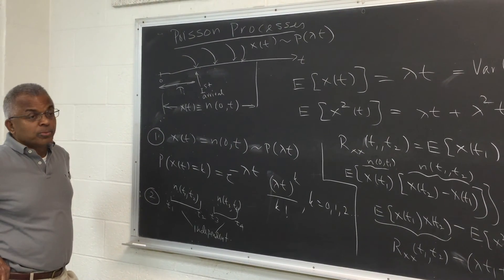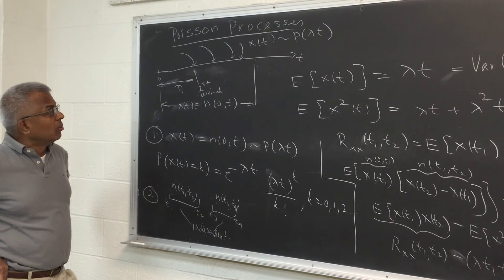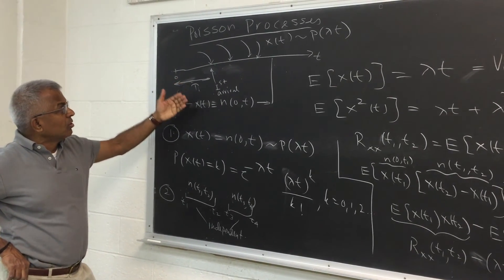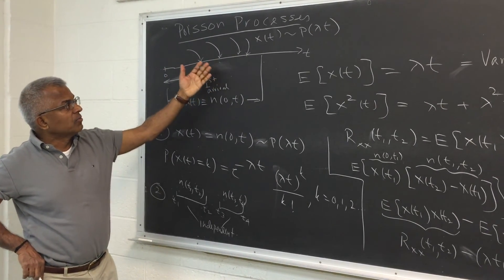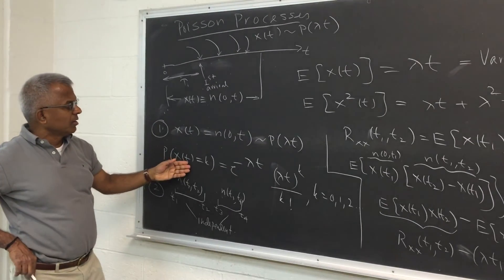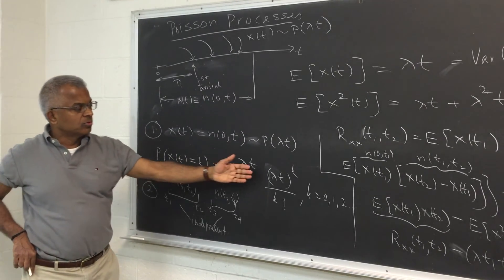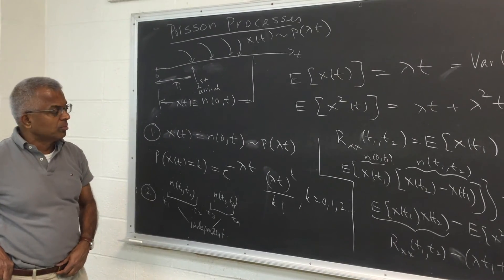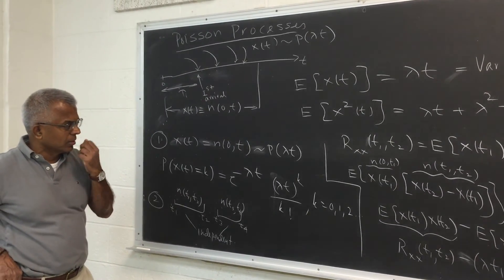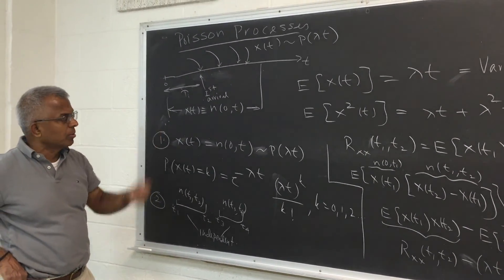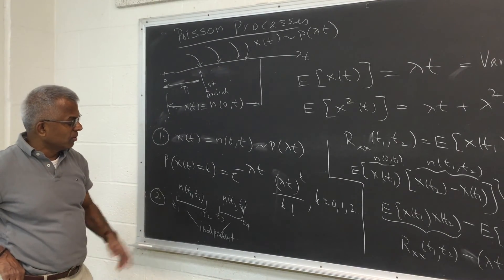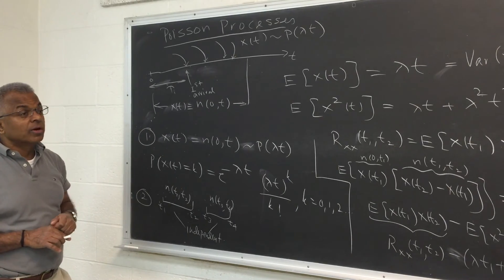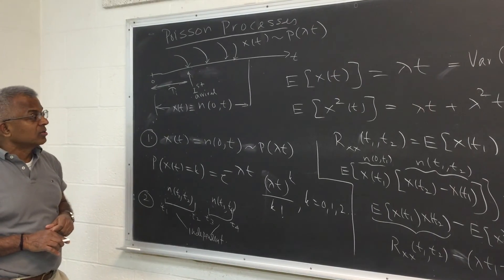Let's look at Poisson processes once again. We say a process is Poisson if the number of arrivals in any interval t equal to k follows a Poisson distribution with parameter λt, where t is the duration of the interval, and the second condition is that non-overlapping intervals are independent.